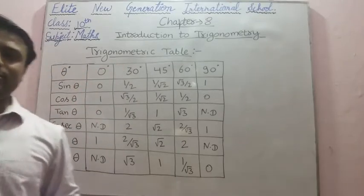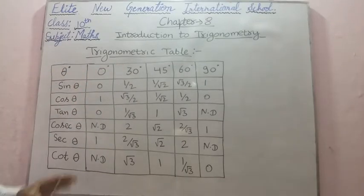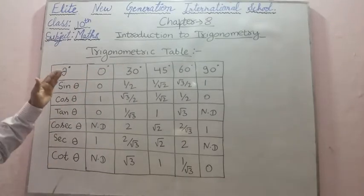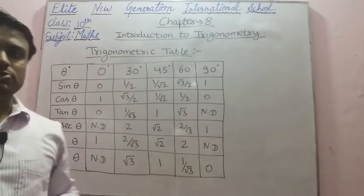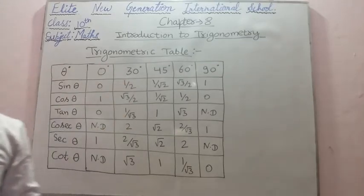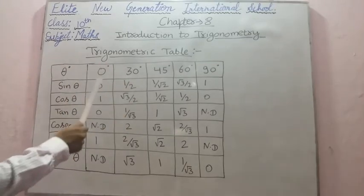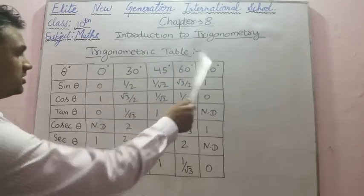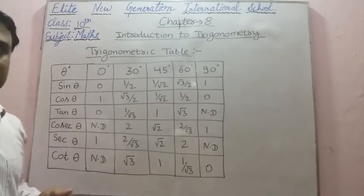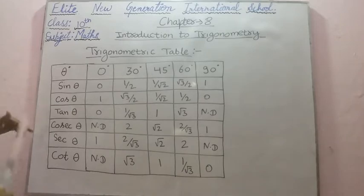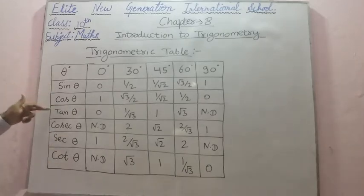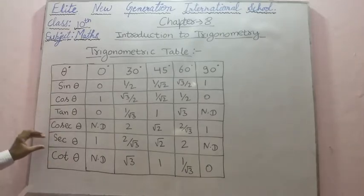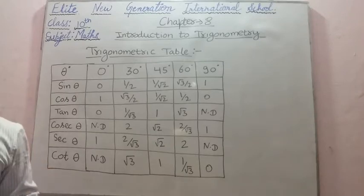In the trigonometric table, we have to understand the important angles. The important angles are 0 degree, 30 degree, 45 degree, 60 degree, and 90 degree, and all their values for the ratios — that is sin theta, cos theta, tan theta, cosec theta, sec theta, and cot theta — are given.